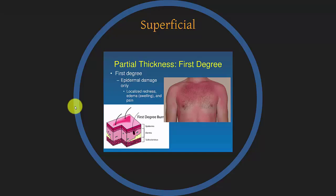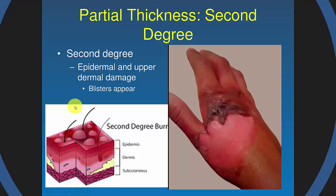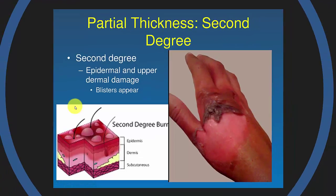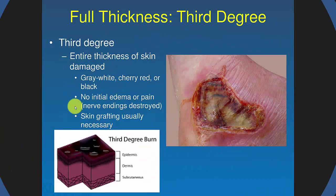Briefly: superficial or first-degree burns — like a sunburn — just go through the first little bit of the epidermis. Partial thickness or second-degree burns may show some blisters and go down into the upper dermis. Full thickness or third-degree burns go through the entire thickness of skin — through the epidermis and dermis and down to the hypodermis.